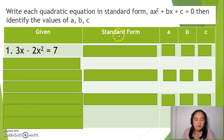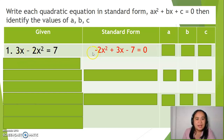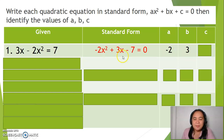Take note that in the standard form, it should be written in the order: quadratic term, linear term, then constant. For number 1, we can rewrite this as negative 2x squared plus 3x, then transfer 7 to the other side to get negative 7. So the value for a is negative 2, the value for b is positive 3, and the value for c is negative 7.